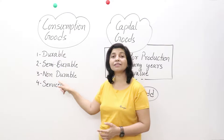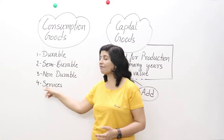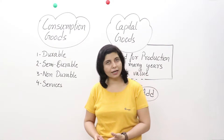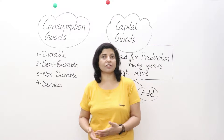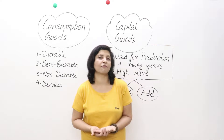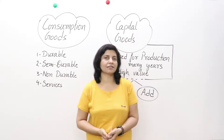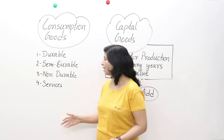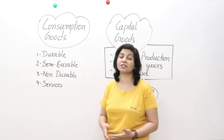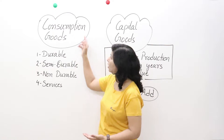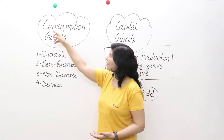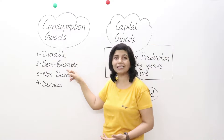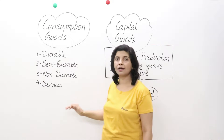Then we have services — like the service of a doctor when we fall ill, a lawyer for legal advice, housemaids, servants, peons, or a teacher. These are services we consume. So consumption goods fall under four categories: durable, semi-durable, non-durable, and services.